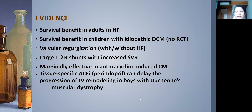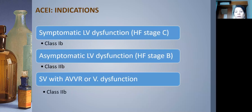Perindopril, a tissue-specific ACE inhibitor, has been shown to delay LV remodeling progression in asymptomatic boys with Duchenne muscular dystrophy. Indications for ACE inhibitors in pediatrics: symptomatic LV dysfunction is a Class 1B indication; asymptomatic LV dysfunction is Class 2B; single ventricle with AV valve regurgitation or ventricular dysfunction is also Class 2B.